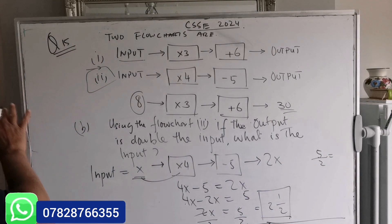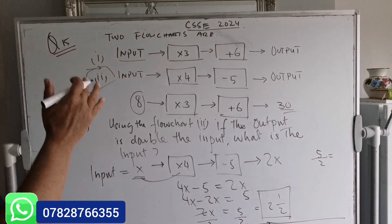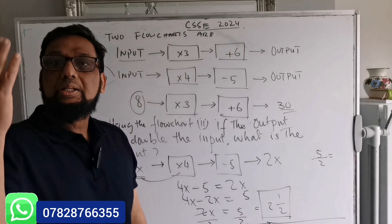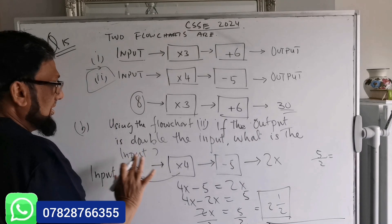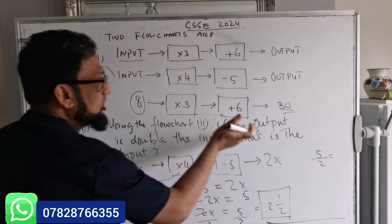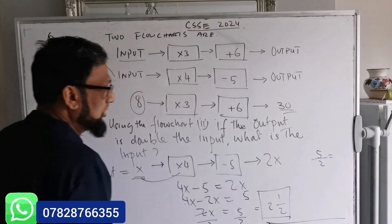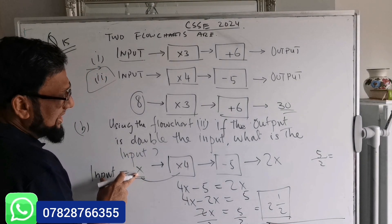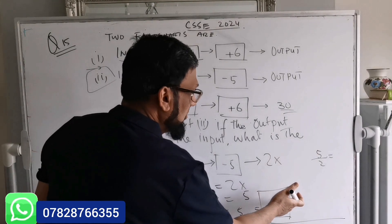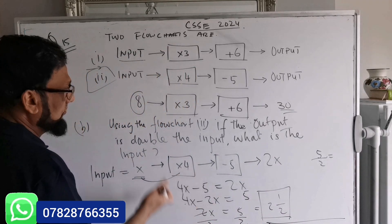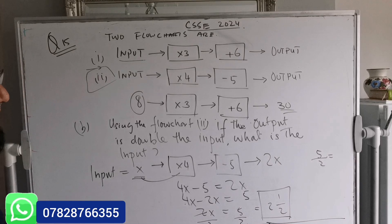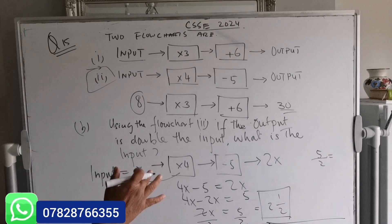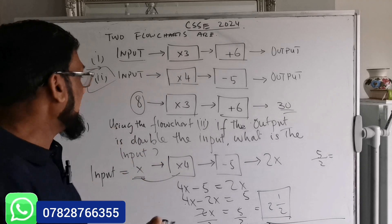So Part B is quite simple. You need to use the concepts of equations. The number is unknown, the output should be double — so I put x for the input, giving 4x minus 5 equal to 2x. Solving it gives x equals two and a half.